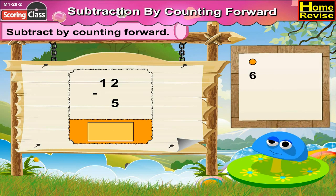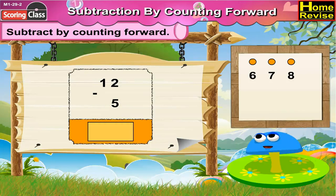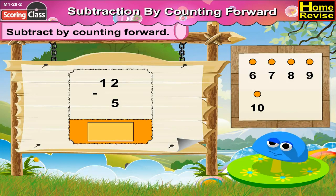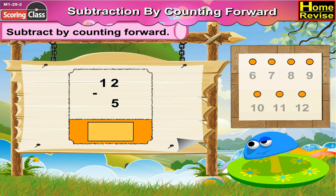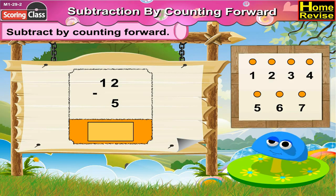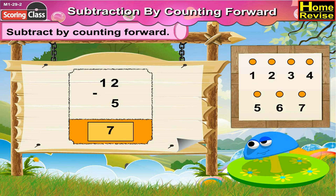12 minus 5 is equal to dash. Now by counting forward it would be 6, 7, 8, 9, 10, 11, 12. So 12 minus 5 is equal to 7.